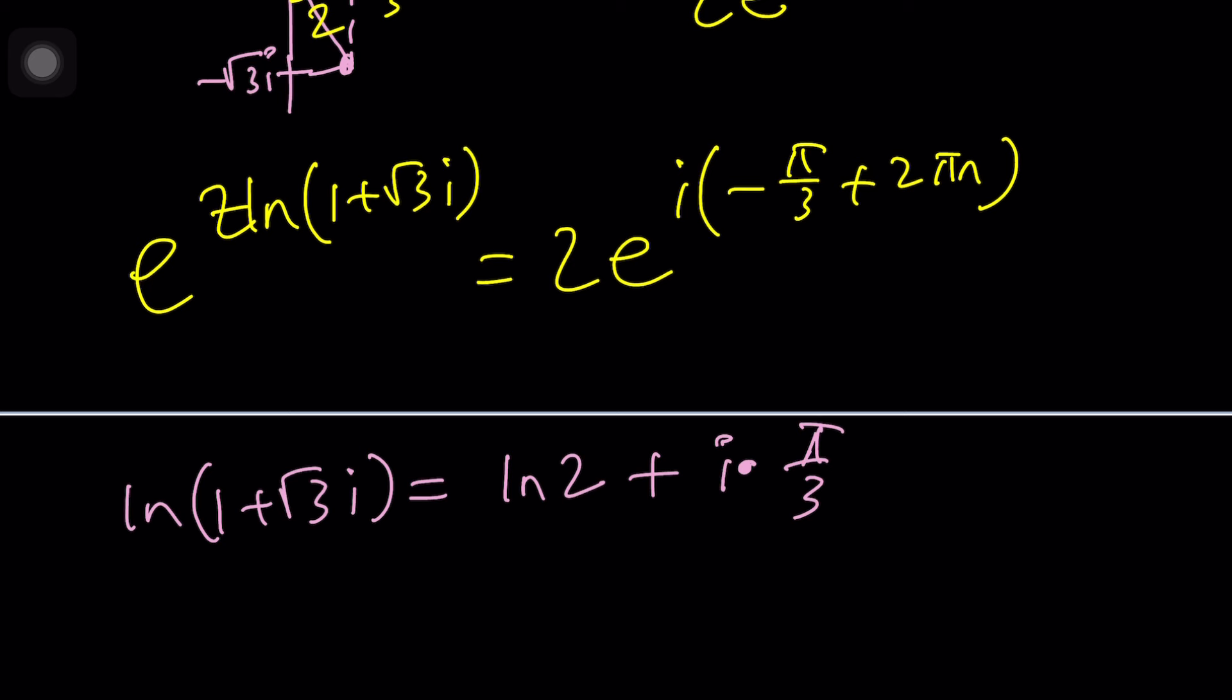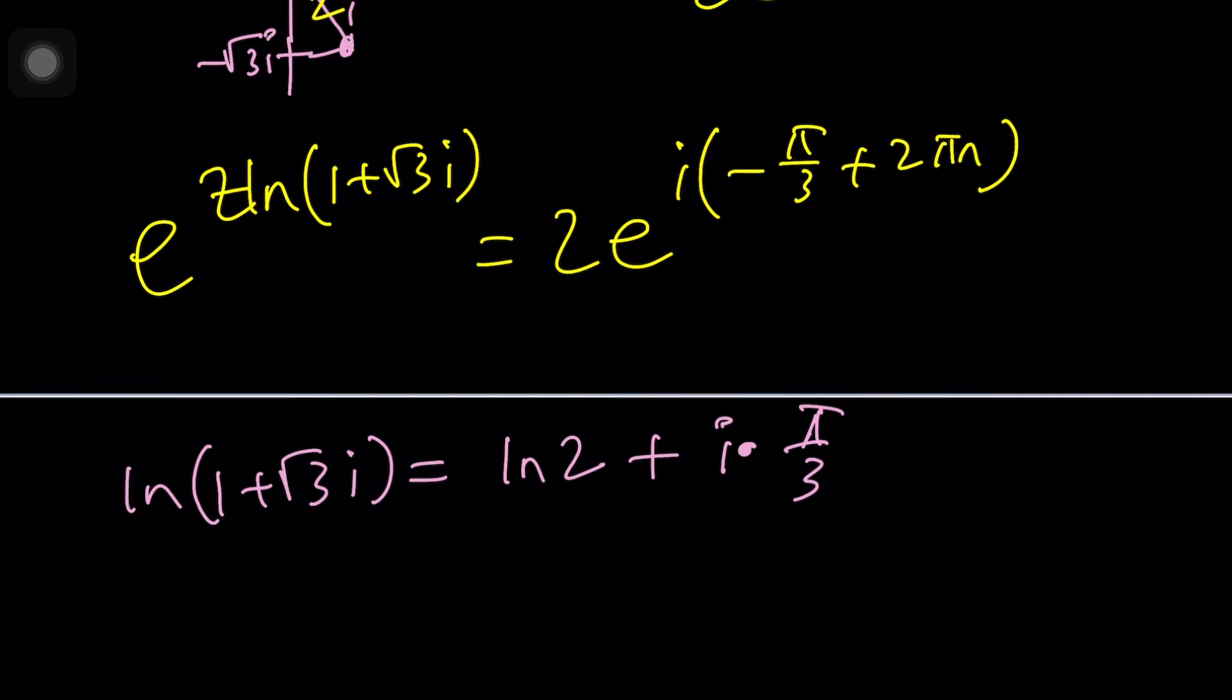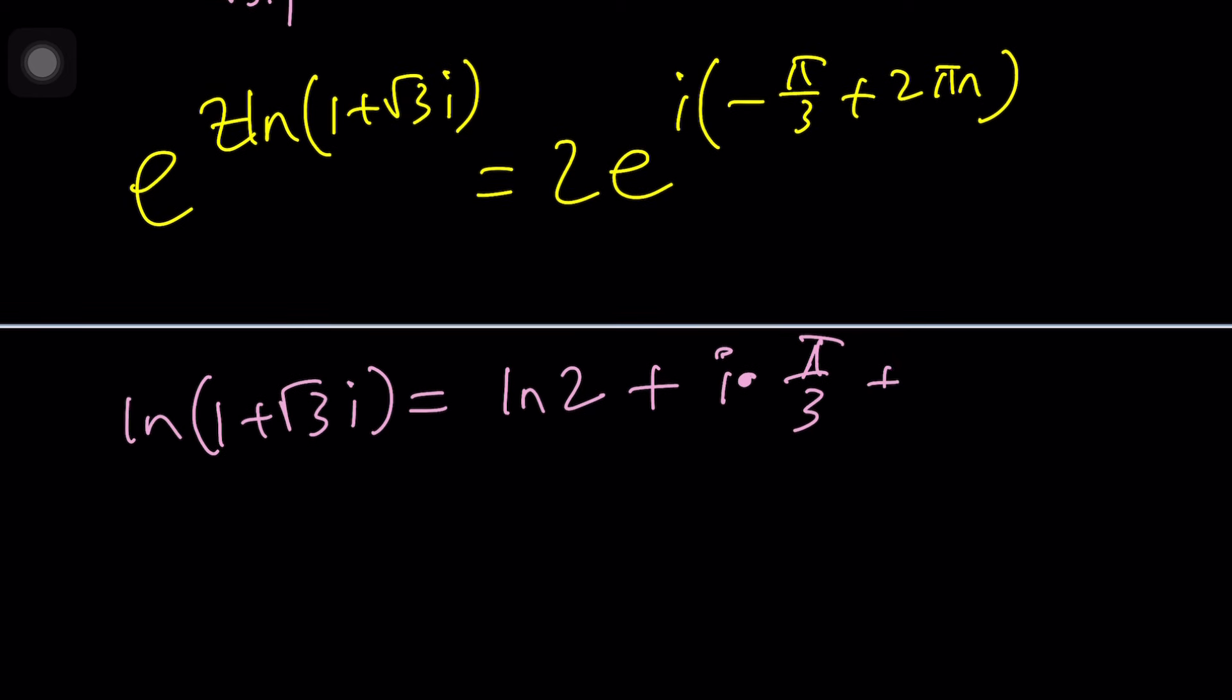Now, here's where the two schools of thought come in. Some people say, oh, you can't just write it as pi over 3, and you need to write it as 2 pi k need to be added. Some people say k must be 0. Let's go ahead with k, and then we can always eliminate it.